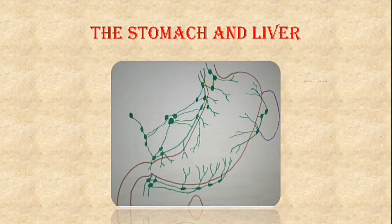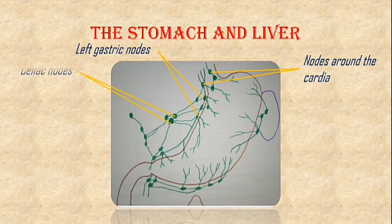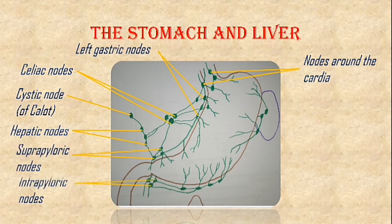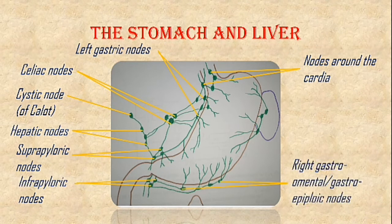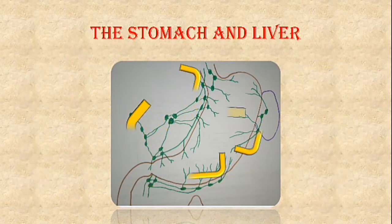The stomach and liver are drained by several groups of nodes. Here are the nodes around the cardia of the stomach. Here are the left gastric nodes, which drain into the celiac nodes. The liver is drained by the hepatic nodes. The gallbladder is drained by the cystic node, or the node of Calot. Here are the suprapyloric nodes and the infrapyloric nodes. Here is the right gastro-omental, also known as the gastro-epiploic nodes, and here is the left gastro-omental or gastro-epiploic node. Here are the splenic nodes. All of these drain into the celiac nodes.